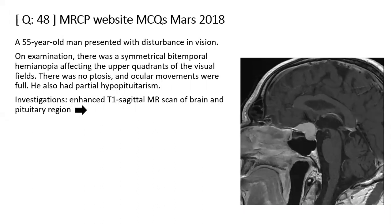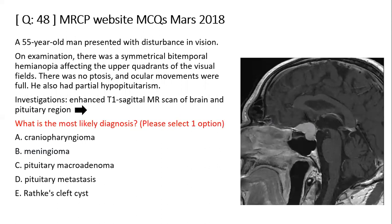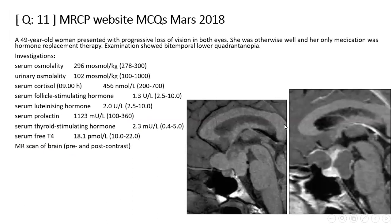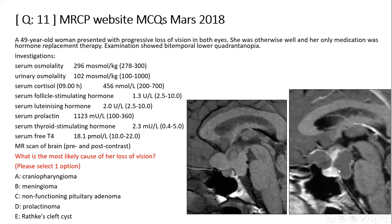A 50-year-old man with visual disturbance, symmetrical bitemporal hemianopia affecting upper quadrants. The image shows homogeneous enhancement in the suprasellar area with a dural tail sign — characteristic of meningioma. Another case: a 49-year-old woman with progressive loss of vision in both eyes on hormonal replacement therapy, bitemporal lower quadrant hemianopia. MRI shows a cystic lesion and a solid part — pre- and post-contrast images confirm craniopharyngioma.